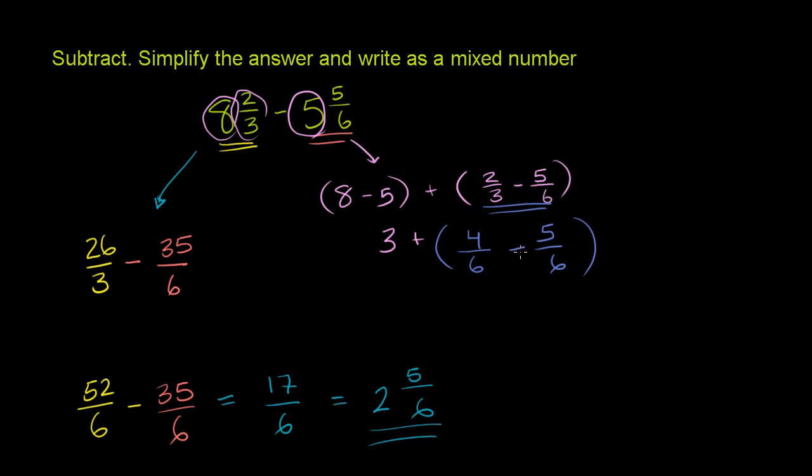Now, if we don't want to deal with that negative number, what we could do, and this is essentially the same idea as regrouping or borrowing, although they shouldn't call it borrowing, they should call it taking, is we can rewrite this 3. That's why this can get a little bit tricky sometimes. Let me draw a line here so we don't get the two ways of doing the problem confused.